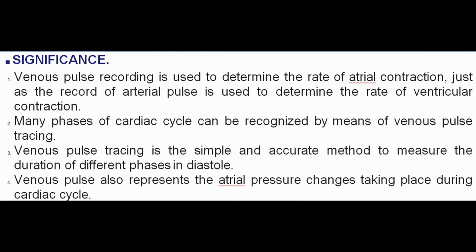Significance: Venous pulse recording is used to determine the rate of atrial contraction, just as the record of arterial pulse is used to determine the rate of ventricular contraction. Many phases of cardiac cycle can be recognized by means of venous pulse tracing. Venous pulse tracing is a simple and accurate method to measure the duration of different phases in diastole. Venous pulse also represents the atrial pressure changes taking place during cardiac cycle.